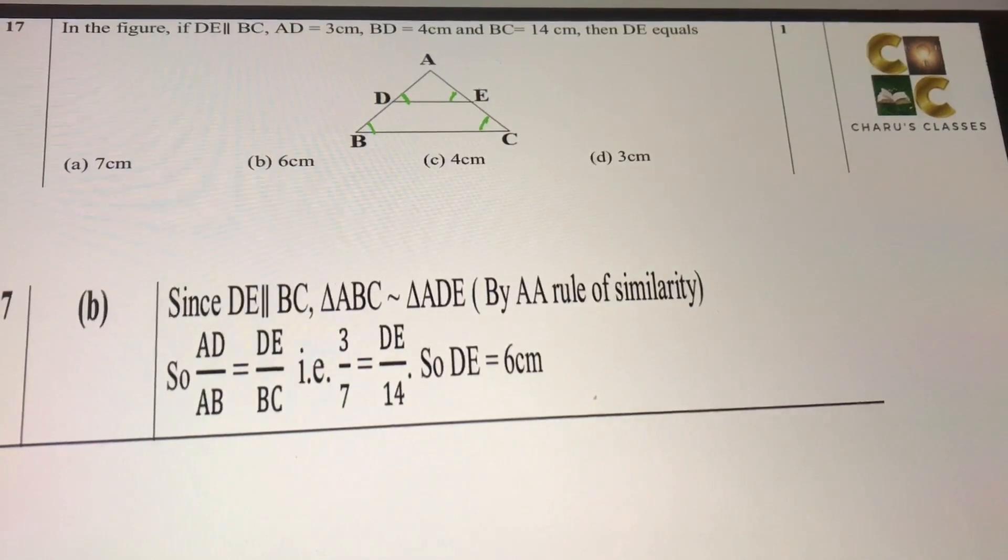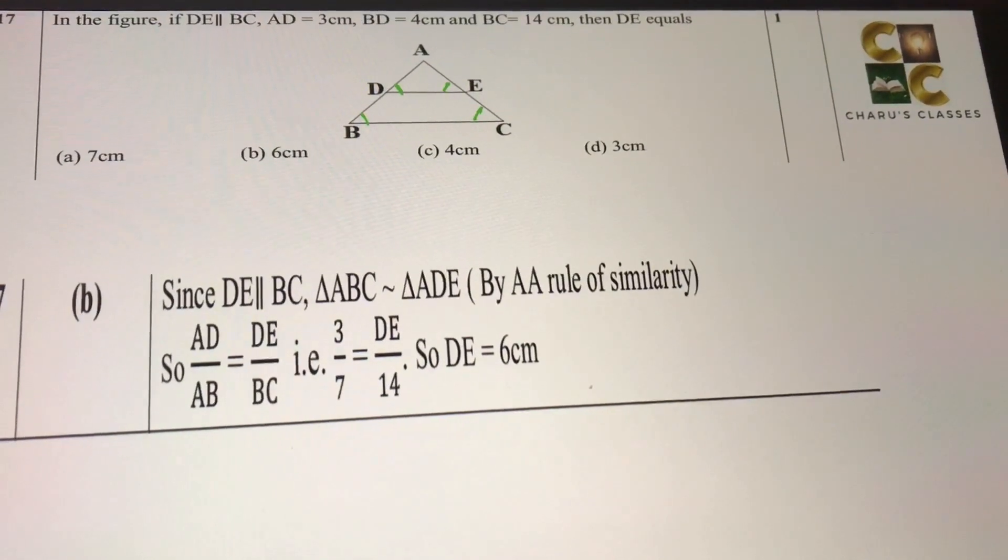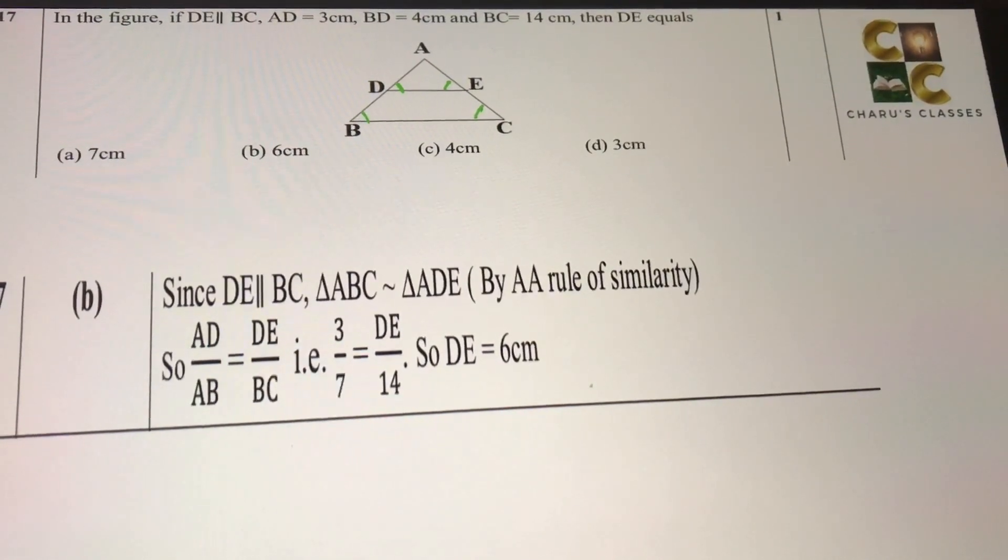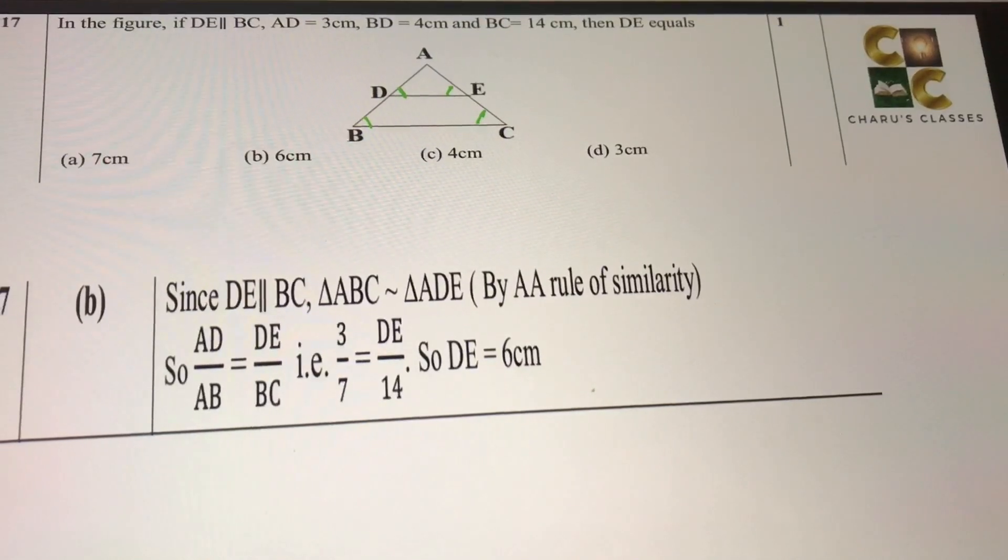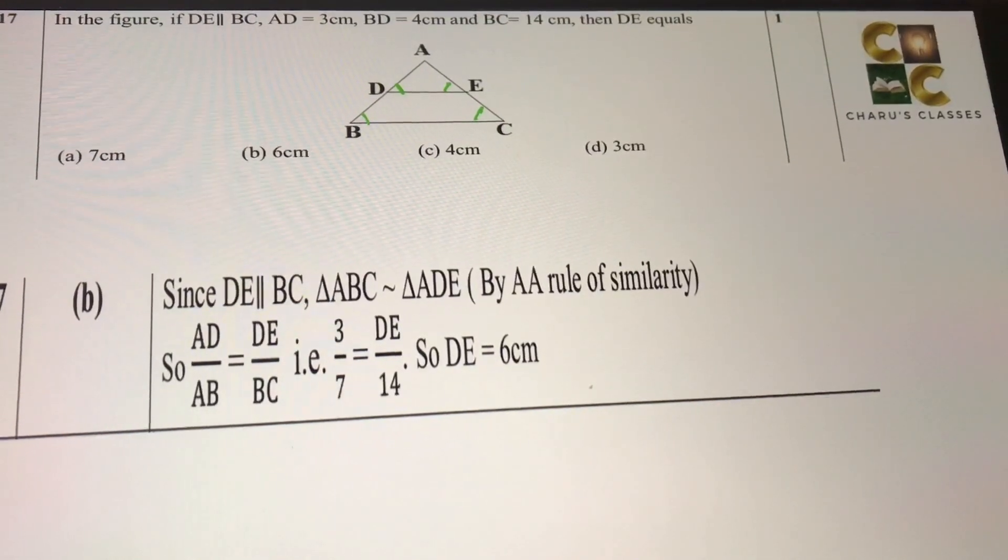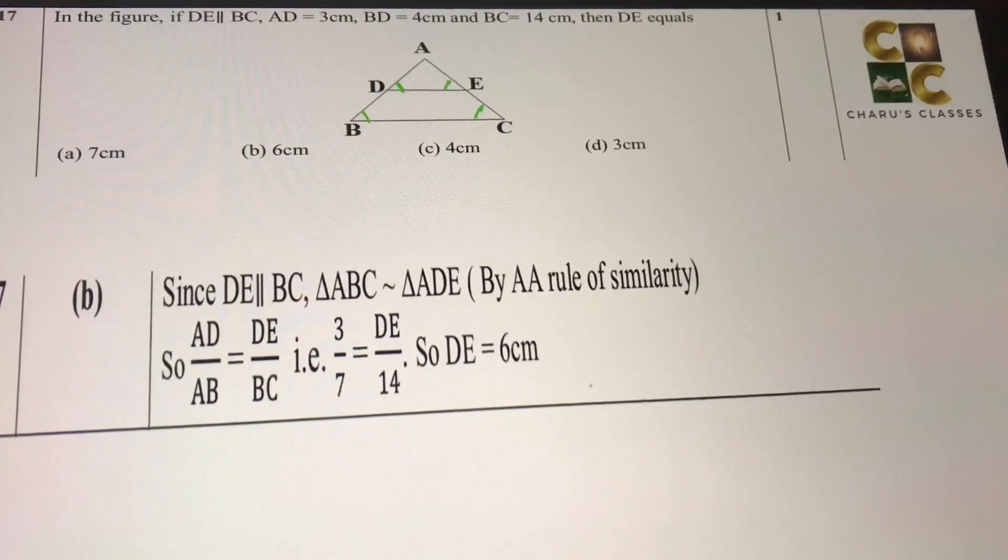AD by AB will be DE by BC. So AD that is 3, AB is 3 plus 4, which is 7. So 3 by 7 is equal to DE by 14. Solving it gives us DE is equal to 6 cm.